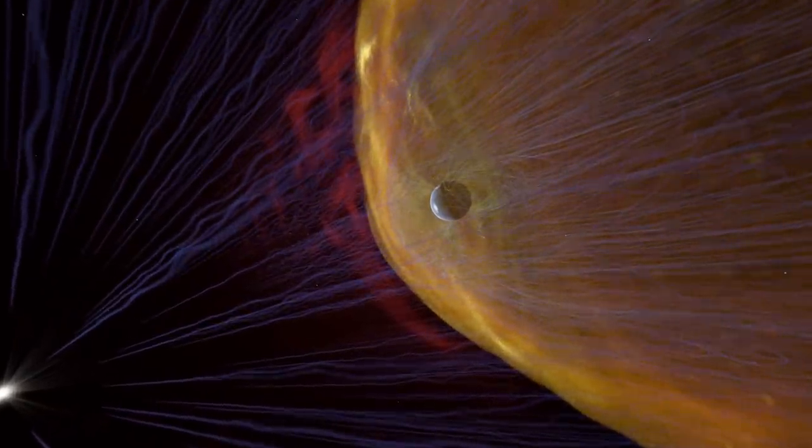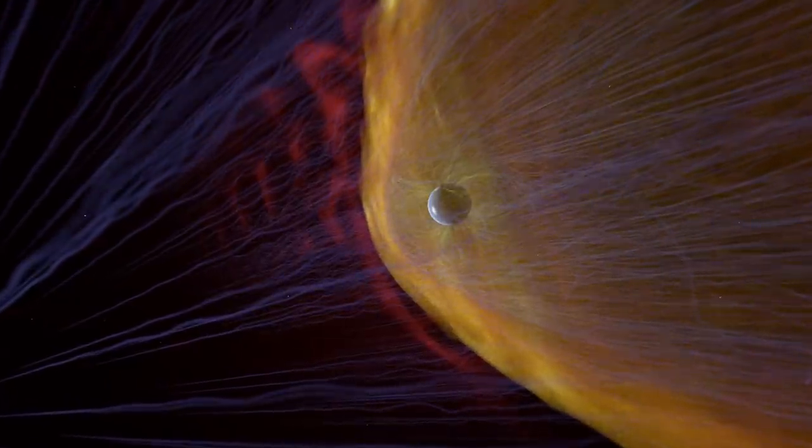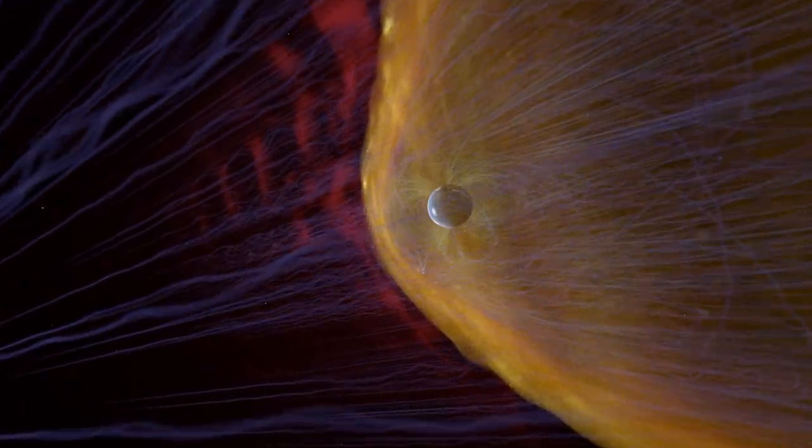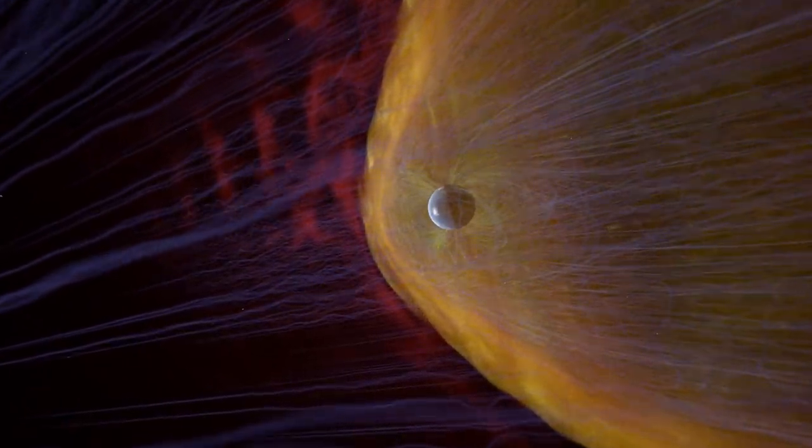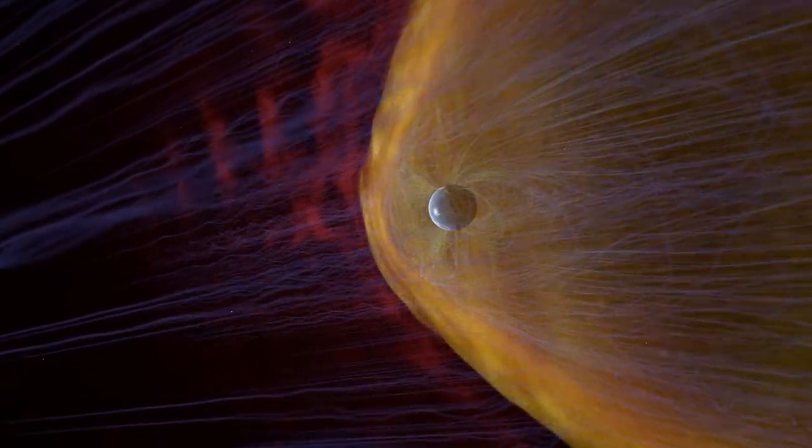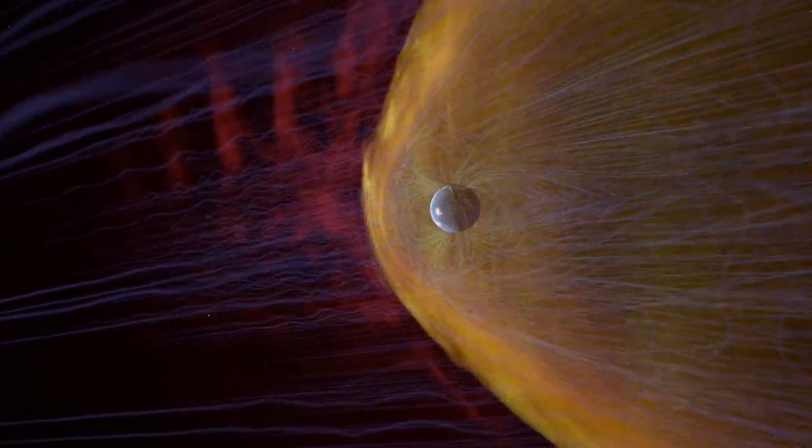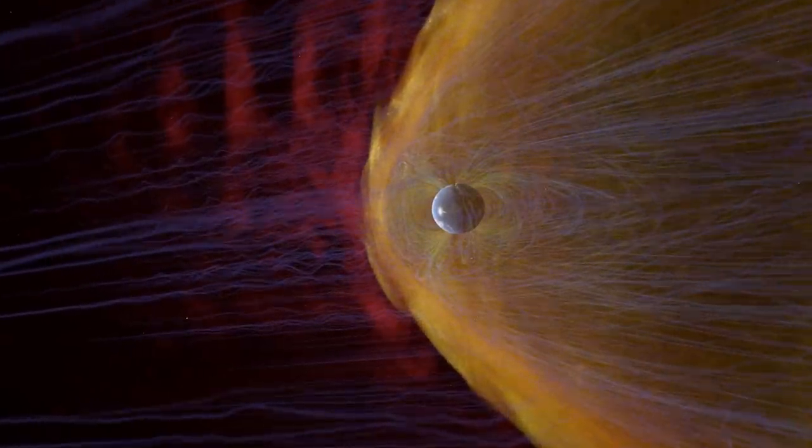To find out how this plasma actually reaches Earth, scientists have simulated its approach in one of the largest solar computer models ever produced. The solar plasma heads toward our planet aboard streams of magnetic field, shown in blue.